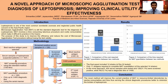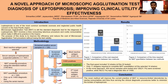Leptospirosis is an emerging zoonotic disease and a neglected public health concern in the Asia-Pacific region. Low-income populations in the tropics have the highest burden. Microscopic agglutination test, or MAT, is still the reference diagnostic test for leptospirosis.